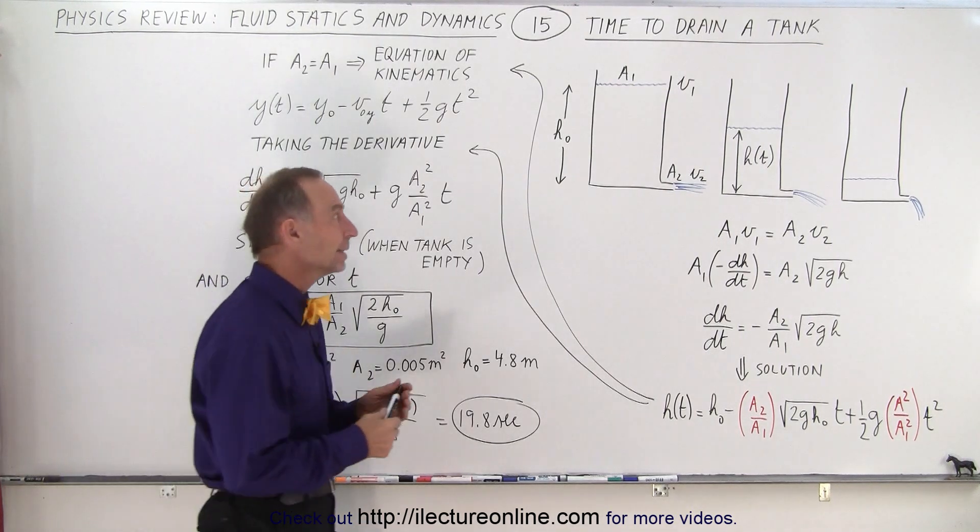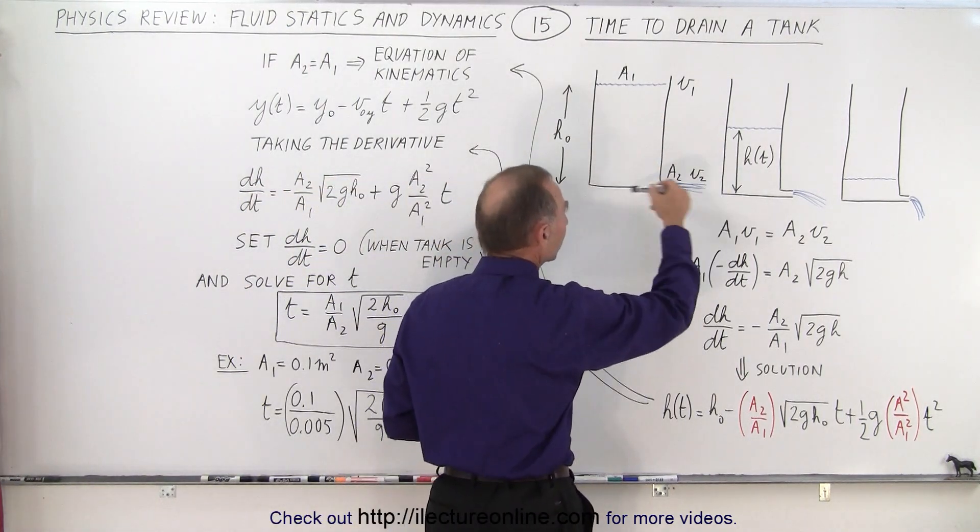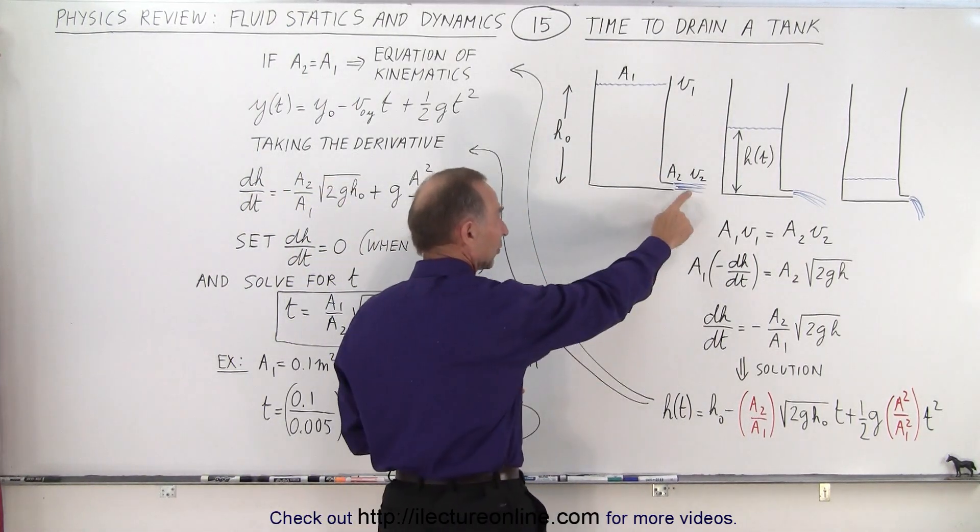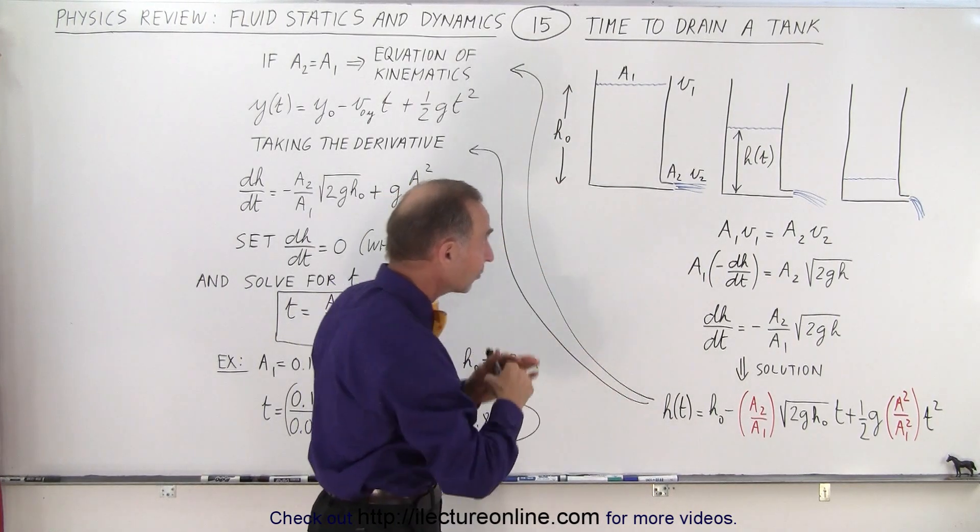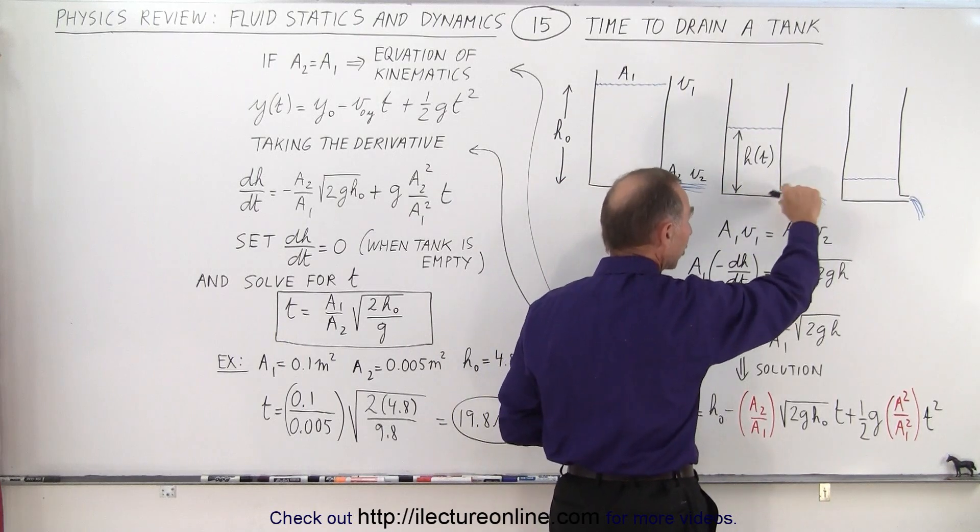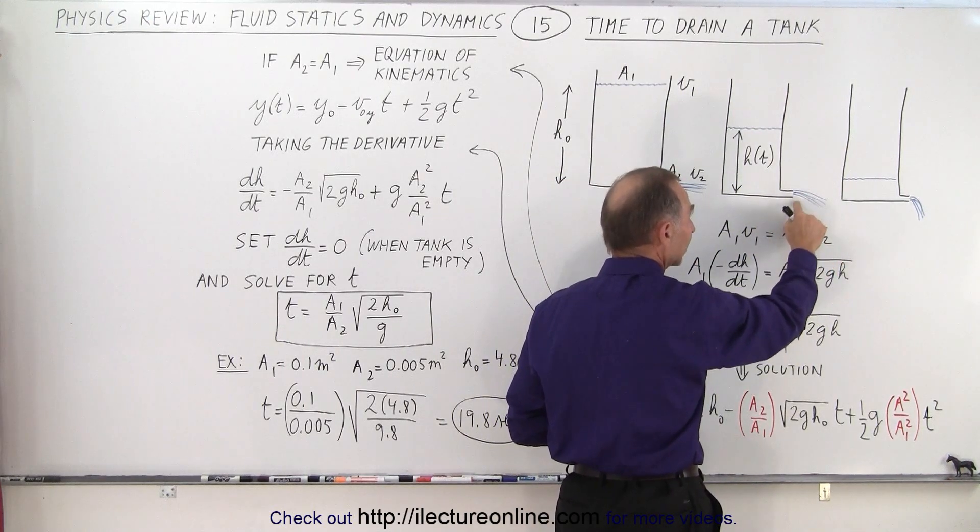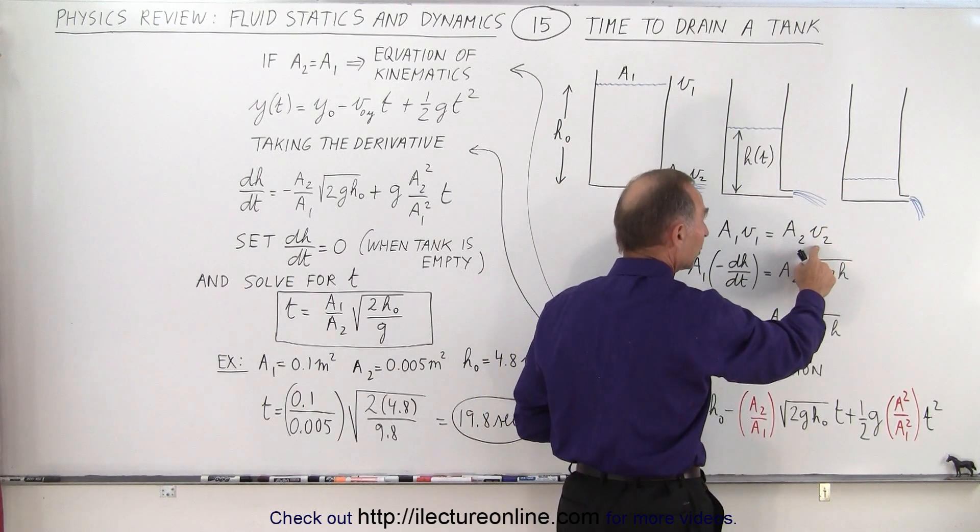Now keep in mind that initially when the tank is full, the rate at which the water comes out is pretty high, so the velocity down there will be high. But as the tank drains and the height diminishes, the water flow will come out slower and the velocity at the outflow will be less.